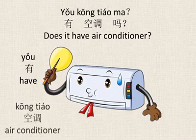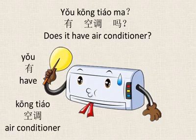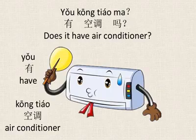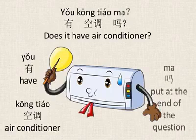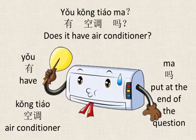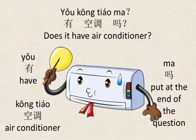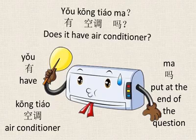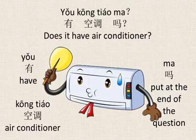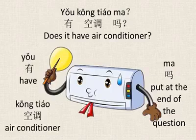The answer in Chinese is 下个月底. 空调 means 'air conditioner', and 吗 is put at the end of a question. So: 有空调吗? — Does it have air conditioner? Answer: 没有. 你可以自己装一个.